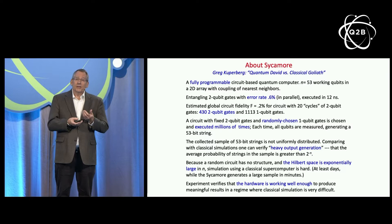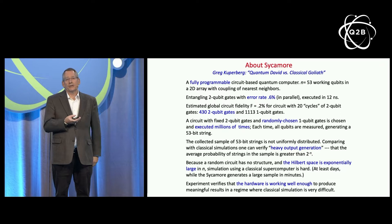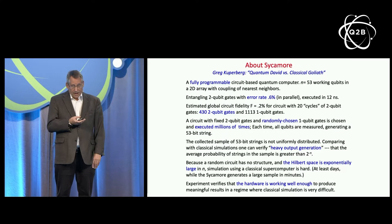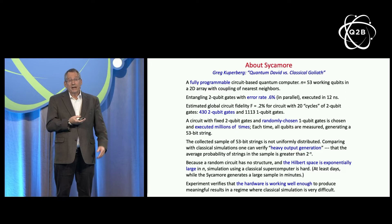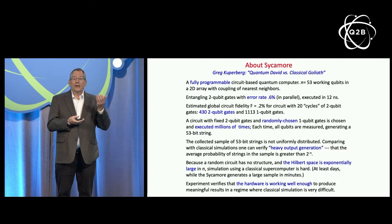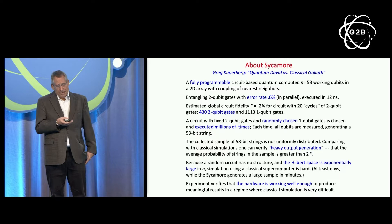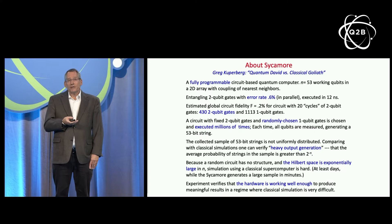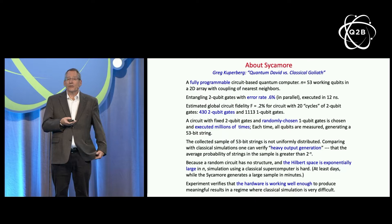Those bit strings sample from a probability distribution that is not uniformly random on all 53-bit strings. With a slightly modified classical computation, one can verify heavy output generation — that the more likely strings really are being generated by the device with higher probability — to validate circuit fidelity. Because this random circuit has no special structure easy to exploit, and the Hilbert space dimension is exponentially large in the number of qubits, it's very hard for a classical computer to simulate what the quantum computer is doing.